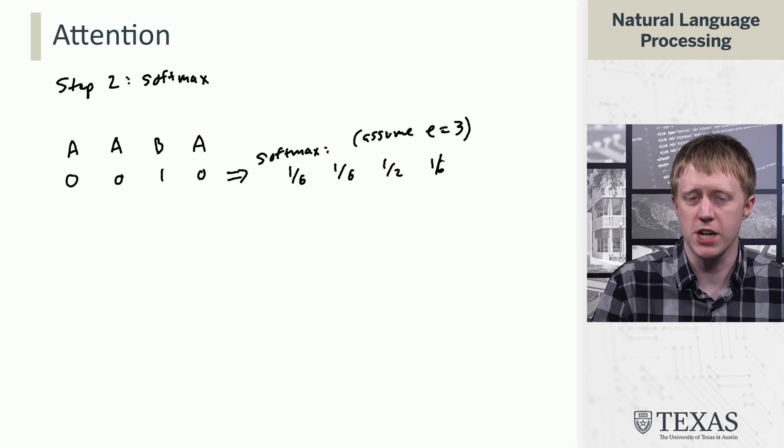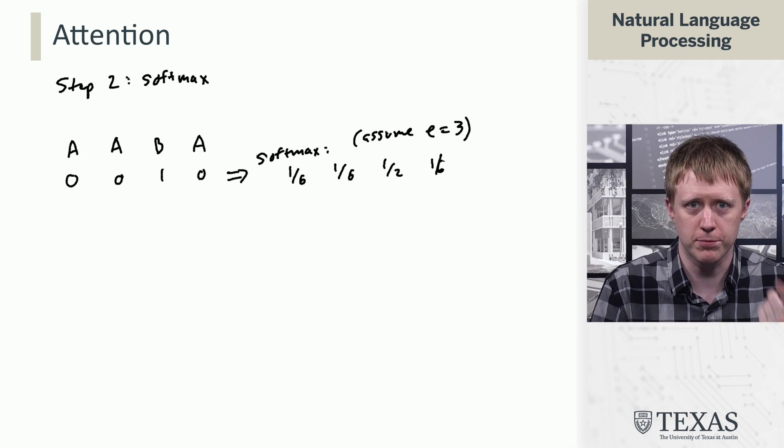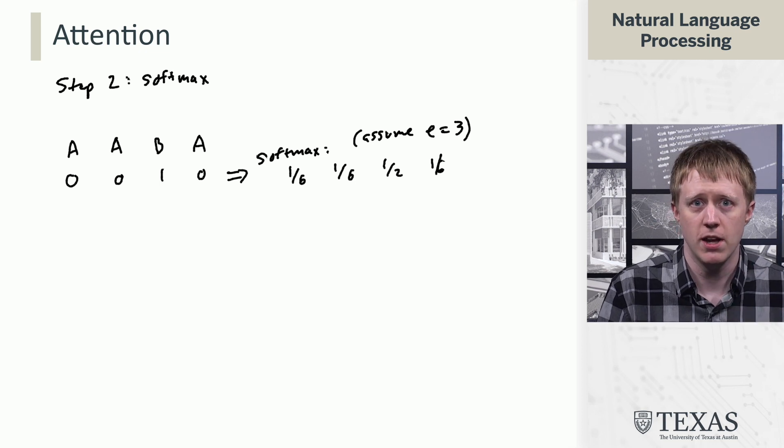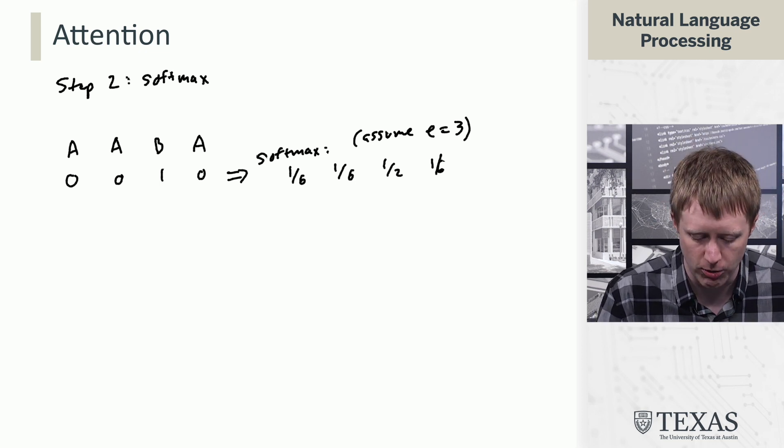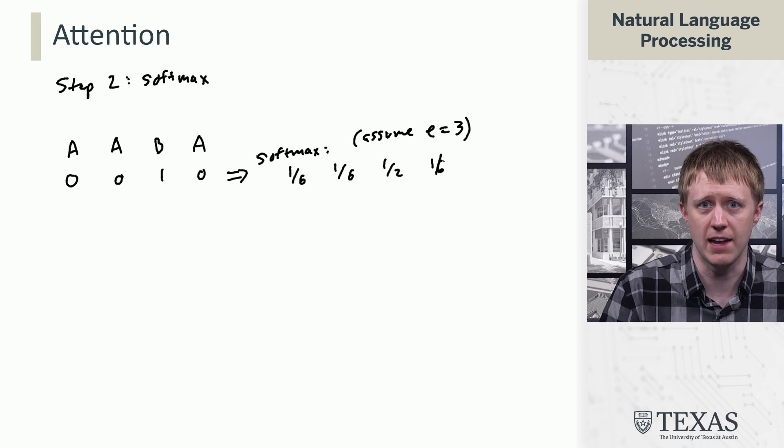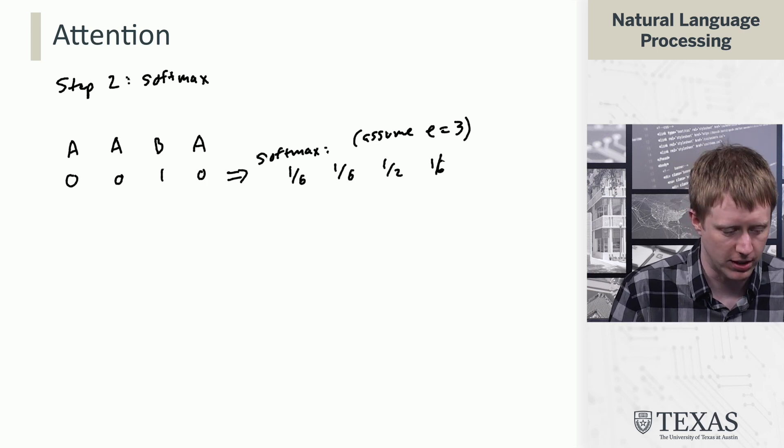So, again, we're exponentiating these things and normalizing them. So, when you exponentiate 0, you get 1. When you exponentiate 1, you get 3. And so, this stuff ultimately adds up to 6. And you get a distribution that looks like this.